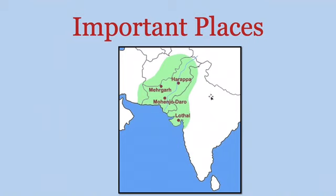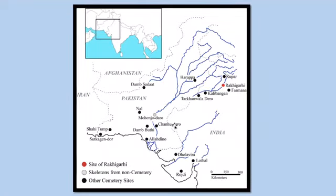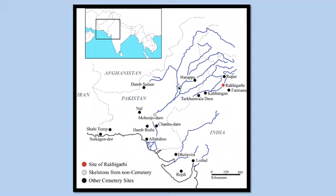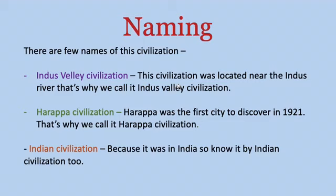When we talk about important places in the Indus Valley civilization, we can see on the map that four cities are highlighted: Harappa, Magar, Mohenjo-Daro, and Lothal. These four cities were considered the most important ones. The map shows how these cities were interconnected, with Harappa and Mohenjo-Daro being almost a thousand kilometers apart. Regarding naming, this civilization has a few different names.